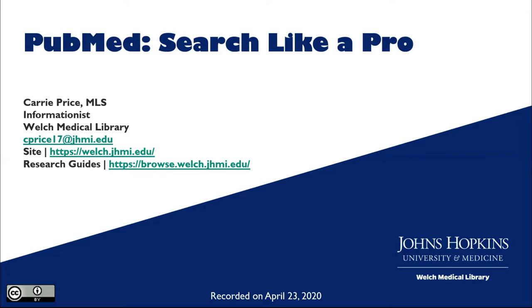When you're searching in PubMed, it can be really hard to find what you need with 30 million records there. The bulk of the content comes from a database called Medline, which is a bibliographic literature database. You should always access PubMed through the Welch Medical Library or the Sheridan Library's website so that you are recognized as a Hopkins affiliate, avoiding the need to pay for PDFs or log into sites.